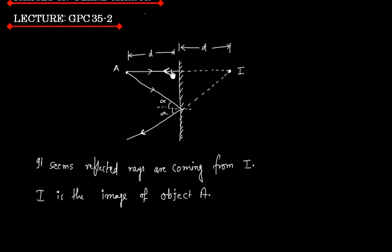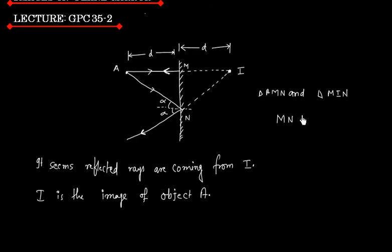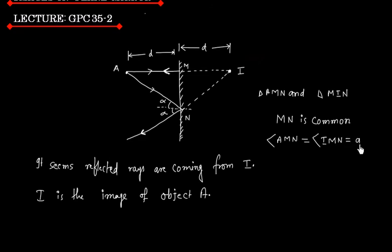If you see these two triangles — let us call them triangle AMN and triangle MIN. In these two triangles, MN is common. Angle AMN is equal to angle IMN, and both are equal to 90 degrees.